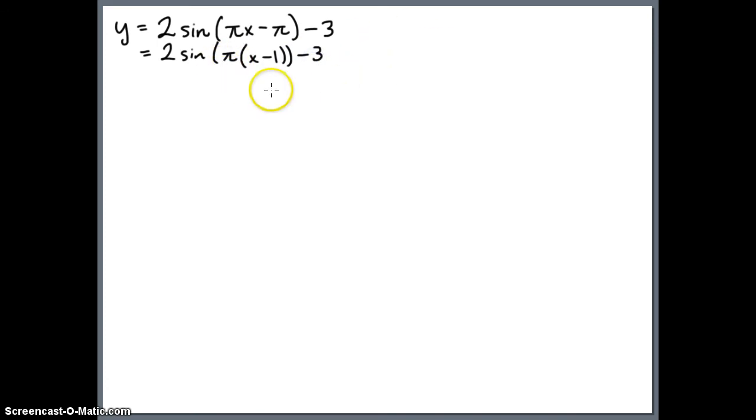So sort of the same deal as usual. The first thing to graph will be y equals sine of x, and then the second thing to graph will be y equals sine of pi times x.